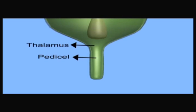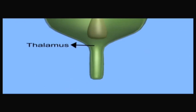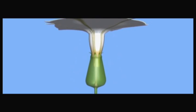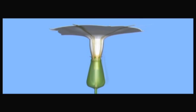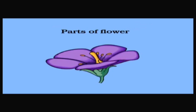The swollen part over the pedicel is the thalamus. Different parts of the flower are arranged on the thalamus in four whorls or rings, one within the other. The thalamus is also called torus or receptacle. It is a suppressed swollen end of the flower axis on which all the floral parts rest. The parts of a flower are: calyx, corolla, androecium, and gynoecium.